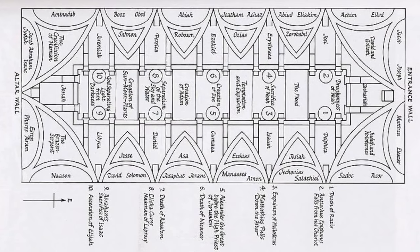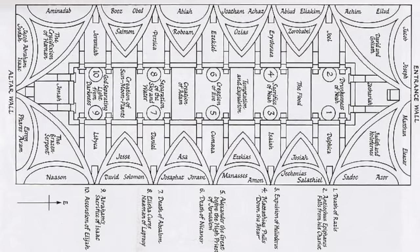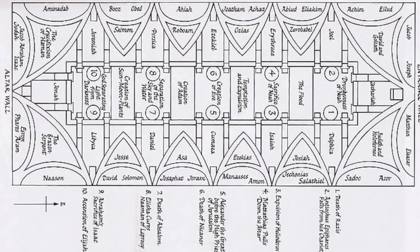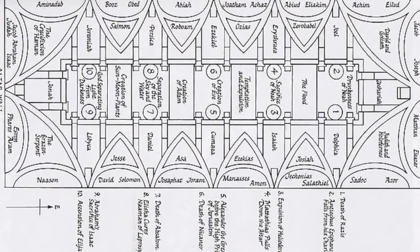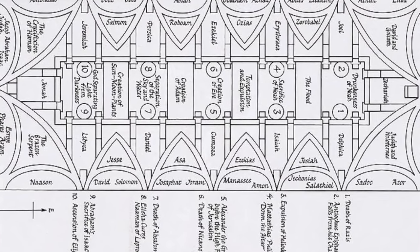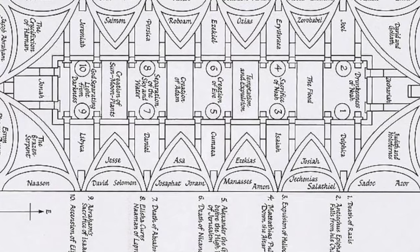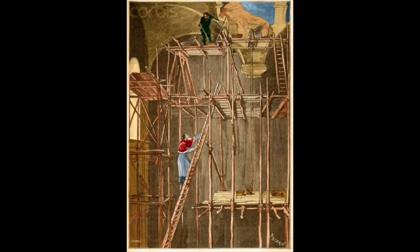First, Michelangelo planned out his painting and sketched it out on paper. He had decided to paint the many stories from the book of Genesis in the Christian Bible.